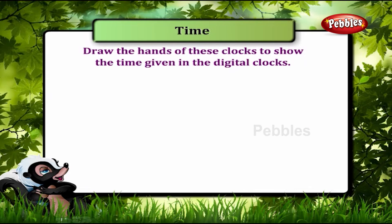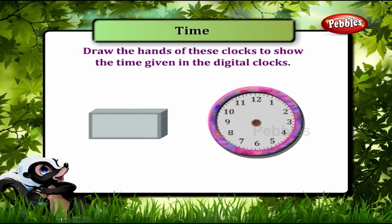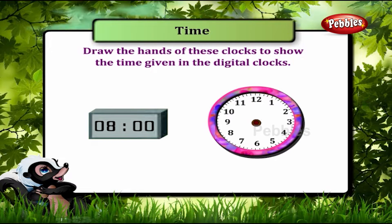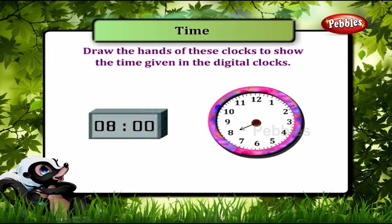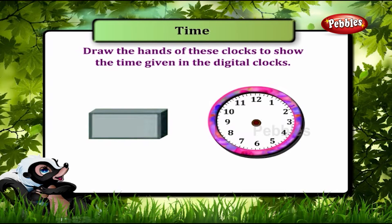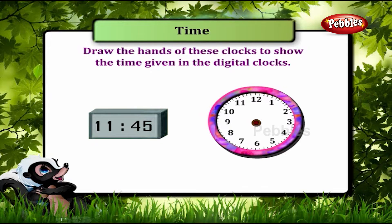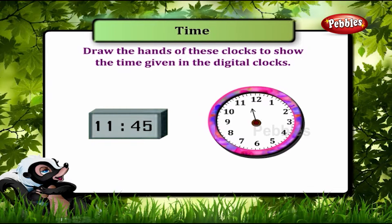Draw the hands of these clocks to show the time given in the digital clocks. 08:00 will have the short hand pointing to 8 and the long hand pointing to 12. 11:45 will have the short hand pointing to between 11 and 12 and the long hand pointing to 9.